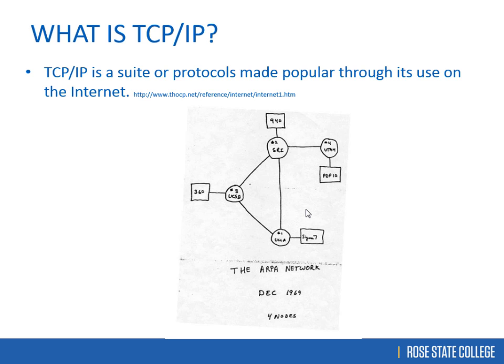TCP/IP is a suite of protocols made popular by the internet. It was originally conceived on a handmade drawing on a napkin. The original internet had four nodes: USC, Berkeley, SRI, Utah, and UCLA. That original design was sketched in December 1969, and it started off as ARPANET — Advanced Research Projects Agency Network.